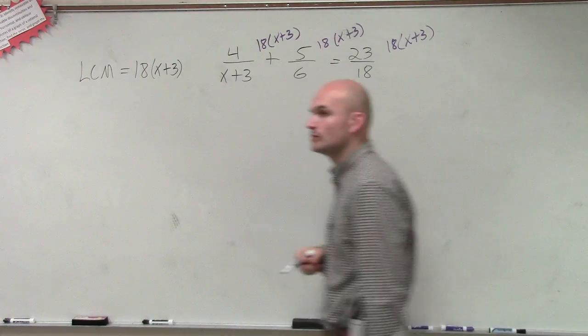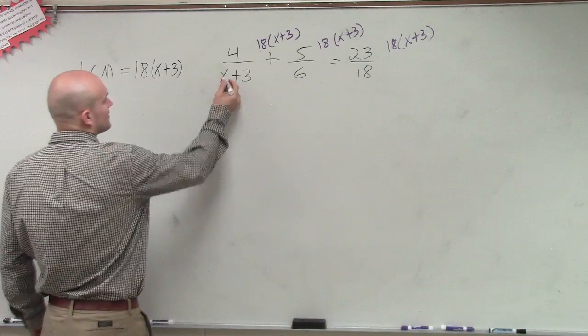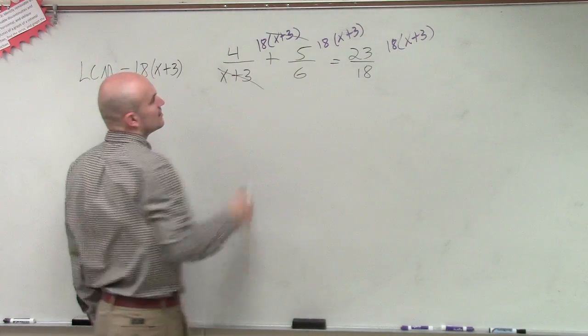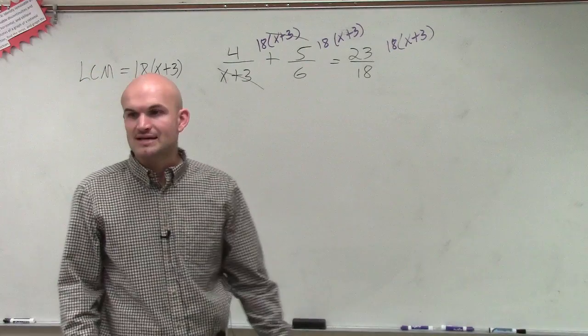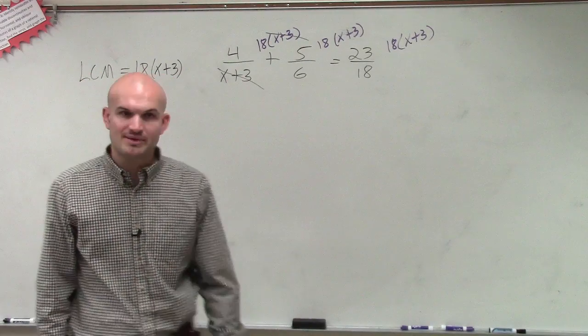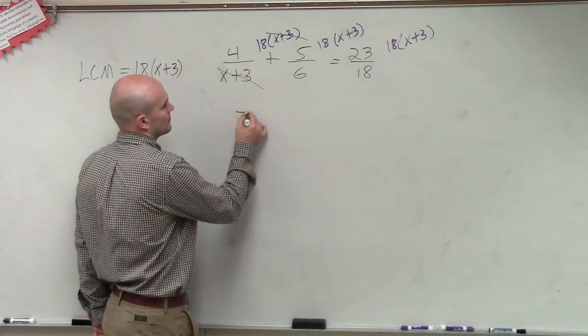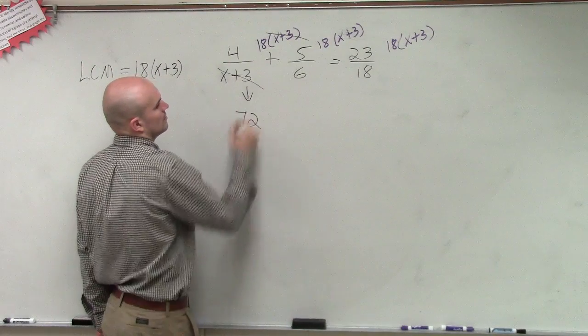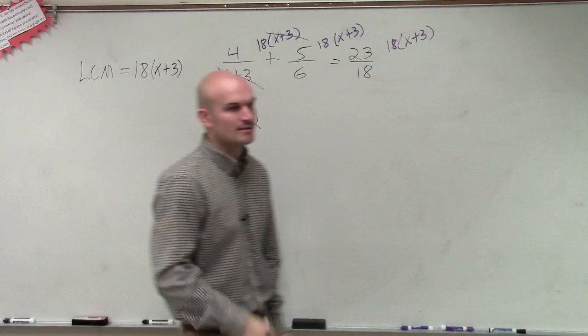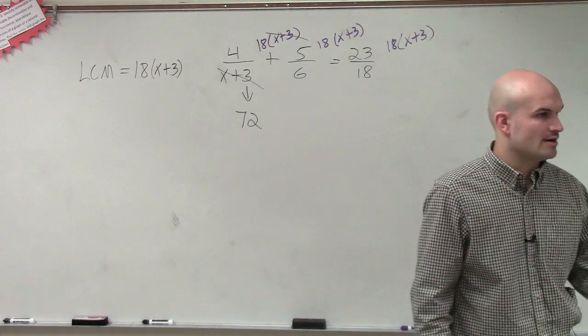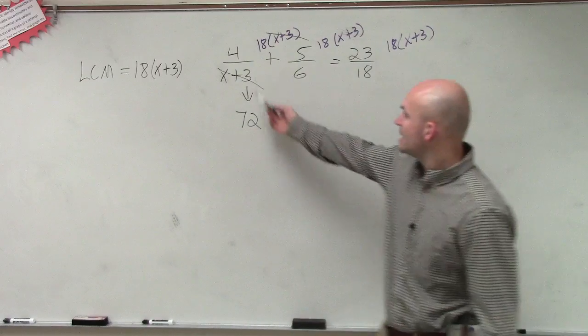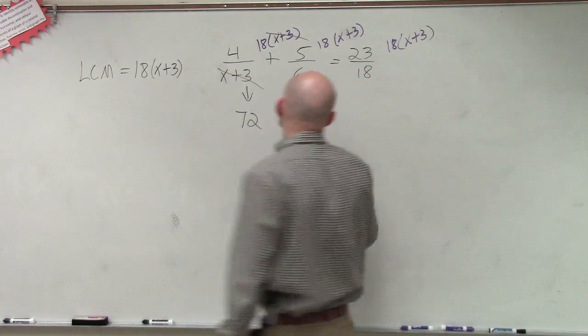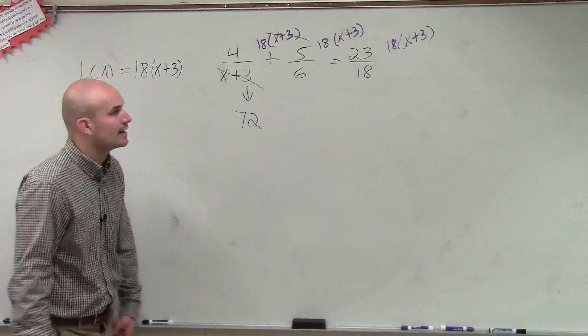So, now by multiplying this, I notice there's a couple things that are going to divide to 1. Here, x plus 3 divided by x plus 3, that just goes to 1. So, I'm left with 4 times 18, which is going to be 72. Does everybody understand how I got 72 from that? Anybody have any questions on that? Because the x plus 3 and the x plus 3 divided out. And what you're going to notice is that's going to happen for everyone, OK?